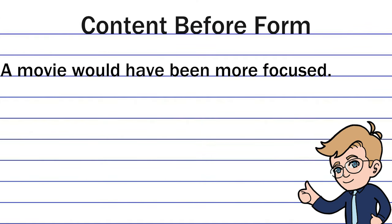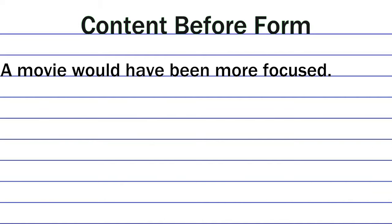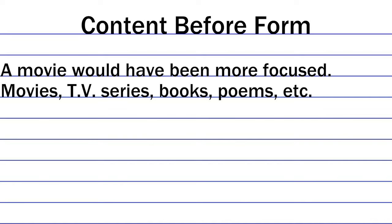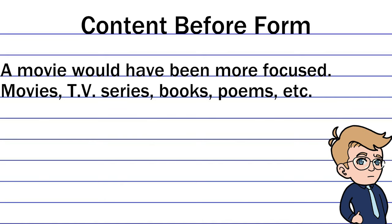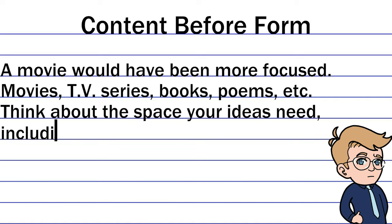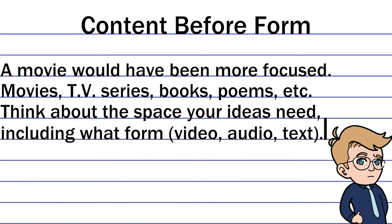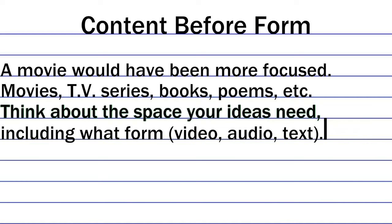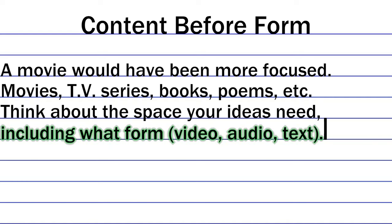This is a prime example of how form needs to be built around content, not the other way around. Movies, TV series, and books are all suited for different ideas. When you have an idea of something to write, think about how you want it to be represented. Is it best in video, writing, or some other form? Should it be a poem, a novel, or a movie? Think about how the form can be molded around the ideas — how could you best show your ideas and messages?